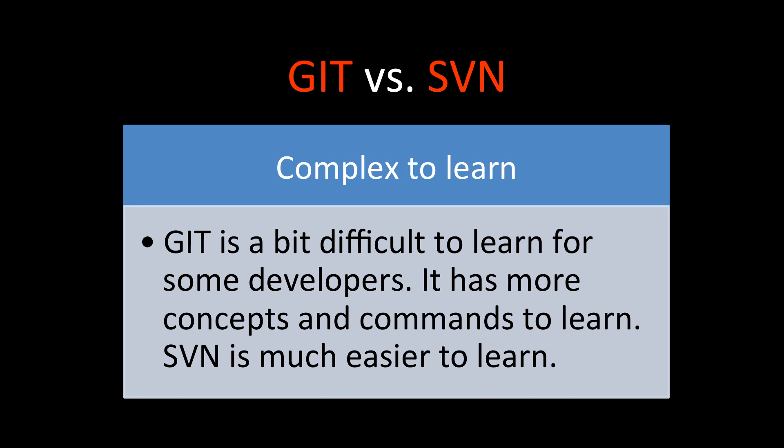Git is very useful but it is a bit difficult to learn. It has more concepts and more commands to learn. Whereas SVN is much easier to learn — you are just checking in and checking out, which looks very simple. Although Git takes some time to learn, it is very useful for almost all use cases in a project.